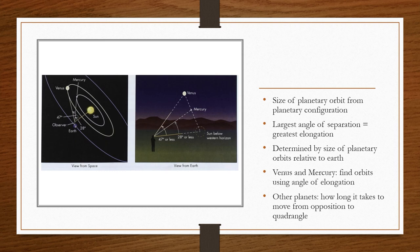Copernicus found that he could determine the sizes of a planet's orbit from information on their planetary configuration. For example, Mercury never goes farther than 28 degrees from the sun in our night sky. The largest angle of separation equals the greatest elongation. This is determined by the size of planetary orbits relative to the Earth. Venus and Mercury have circular orbits around the sun. Using trigonometry, you can find the orbits by using the planetary angle of elongation. But for other planets, you can determine their sizes by looking how long it took from them to move from opposition to the quadrangle.